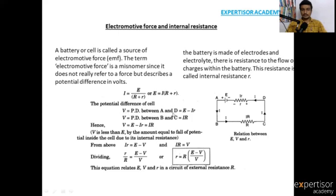The potential difference V between terminals A and D is equal to E minus iR (capital E minus i times small r). The potential difference between B and C equals iR. So the final relation is V = E − ir.